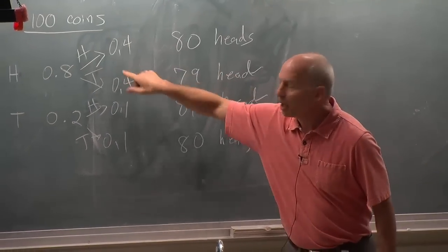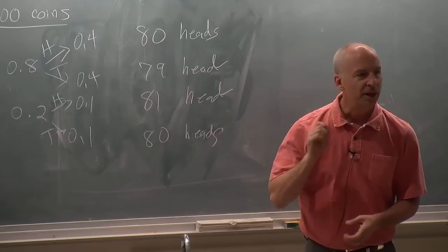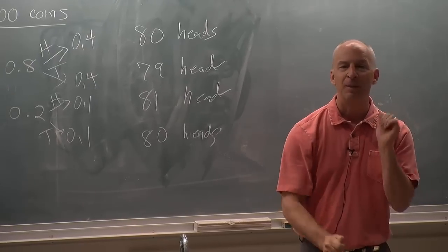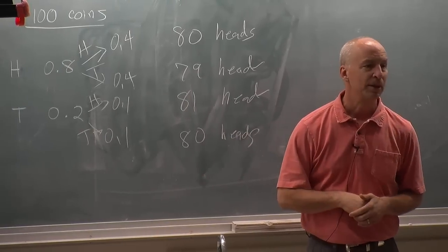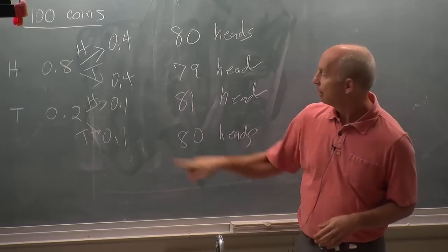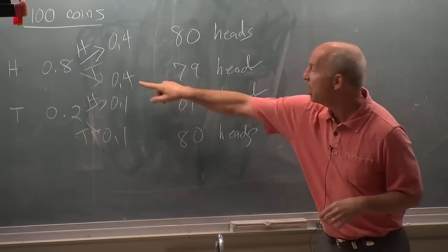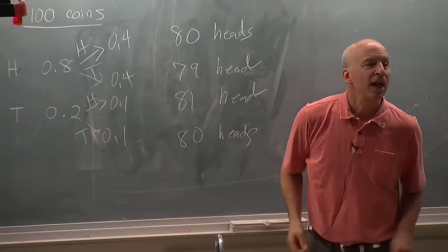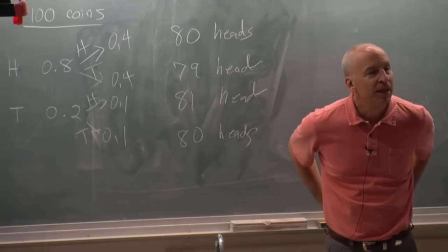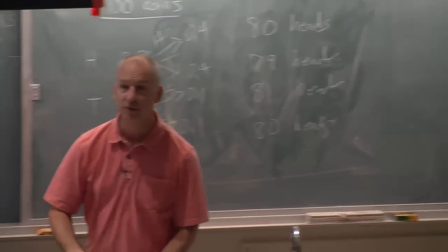If I start out of equilibrium, and I start grabbing coins at random and flipping them, I could move away from equilibrium. I could go to 81 heads, but much more likely toward equilibrium. It's much more likely that I'll go toward equilibrium than away from equilibrium. Four times as likely, in fact, with the first coin flip.